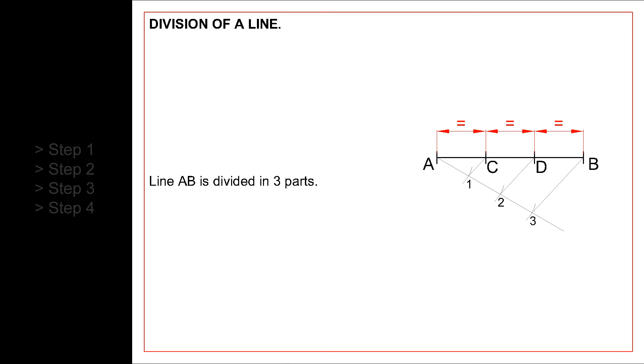Line AB is now divided into three equal parts: AC, CD and DB.